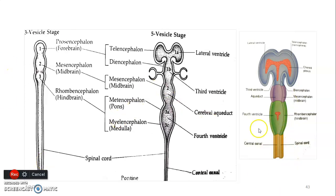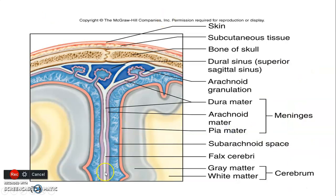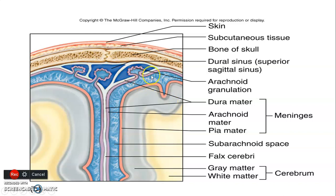You'll be asked about the primary brain vesicles and the derivatives from the wall and the cavity of the vesicles. Regarding reabsorption of CSF: the superior sagittal sinus is located here. The outer and inner parts of the dura mater surround the subarachnoid space. The pia mater and arachnoid mater bound the subarachnoid space containing the arteries and CSF. CSF is reabsorbed through arachnoid granulations and empties into the superior sagittal sinus. These arachnoid villi are at the superior sagittal sinus.